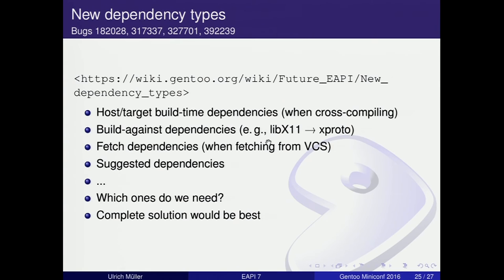And the never-ending story: new dependency types — host, target, and build dependencies for cross-compiling, and fetch dependencies. Someone has to pick this up, otherwise it won't happen. This has been proposed since bug number 180,000-something. Someone has to work out a reasonable proposal for this, otherwise it simply won't happen.